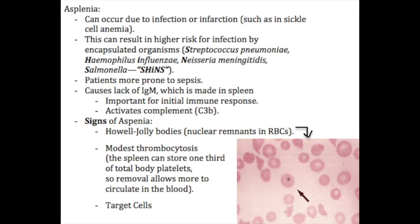In addition, you'll see in the red blood cells what are called Howell-Jolly bodies — little pieces of nuclear remnant that would normally be cleared out by the spleen. Without a spleen, they stick around inside the red blood cell and you're able to see these nuclear remnants, which we call Howell-Jolly bodies.